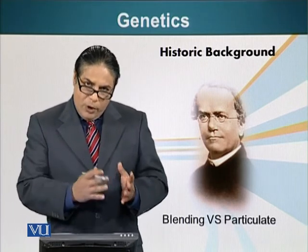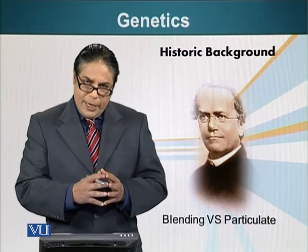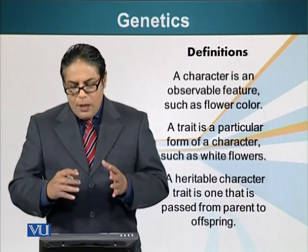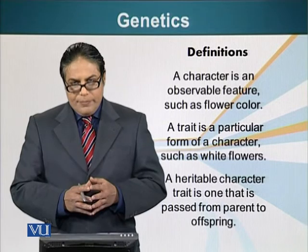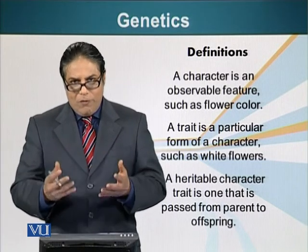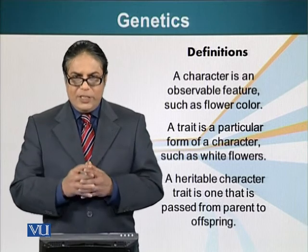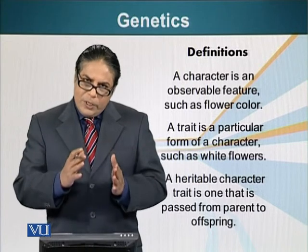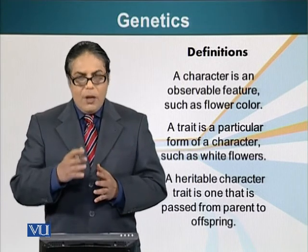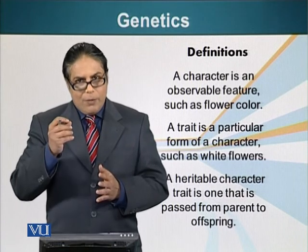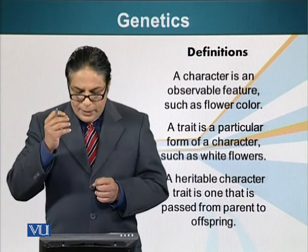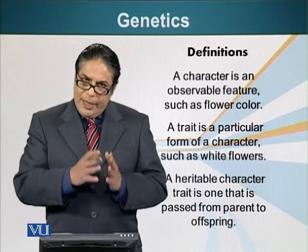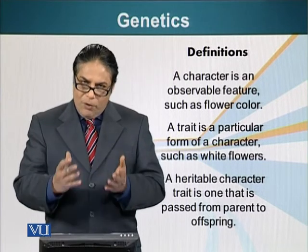Before we start talking about principles in more detail, let's clarify some definitions. A character is an observable feature — for example, the color of a flower, the height of a plant, the shape of a seed, or the color of a seed. A trait is a particular form of a character. For example, white flower and red flower are traits, while flower color is the character. So red flower is a trait; the color of a flower is a character.